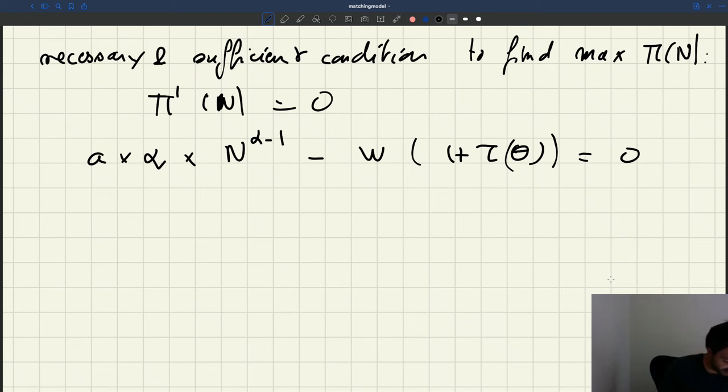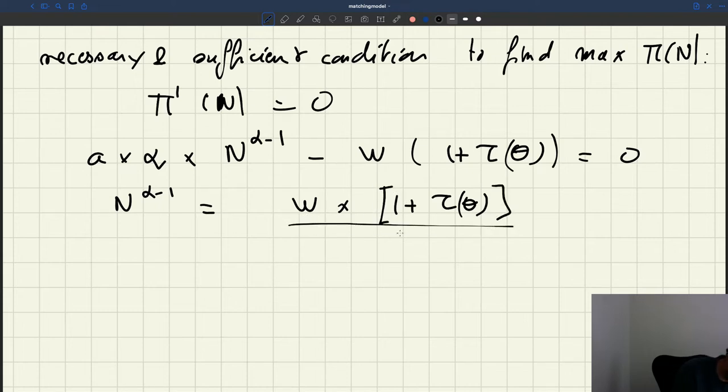So I need to have this equal to 0. Now I want to reshuffle terms around a little bit to figure out what is the number of producers that comes out of this. So you can rewrite this as n^(α-1) equals w times (1 + τ(θ)) divided by a times α.